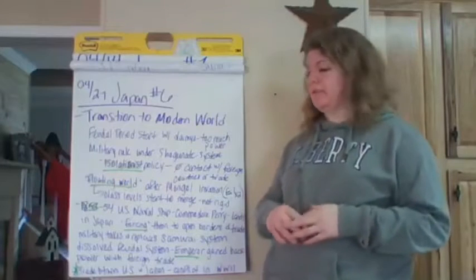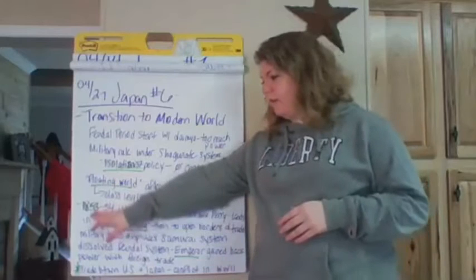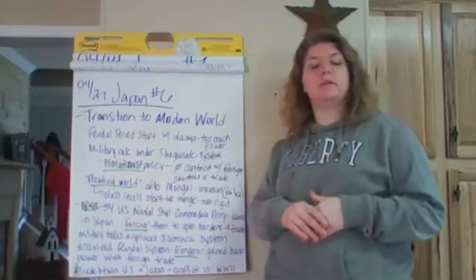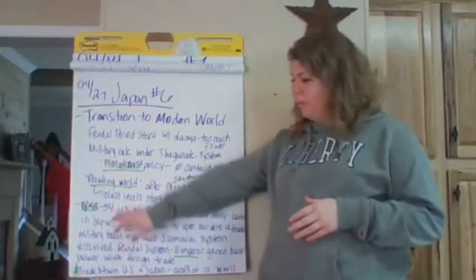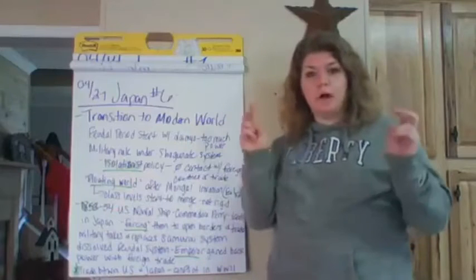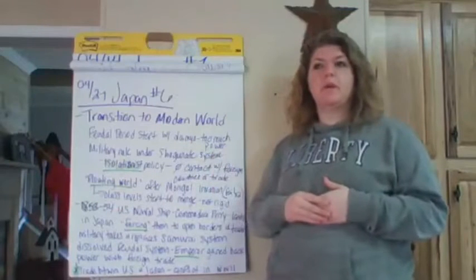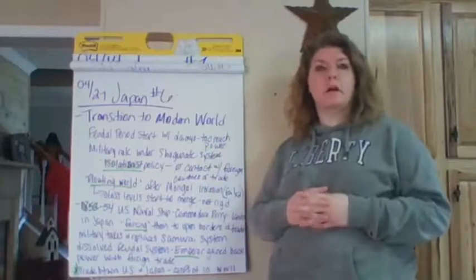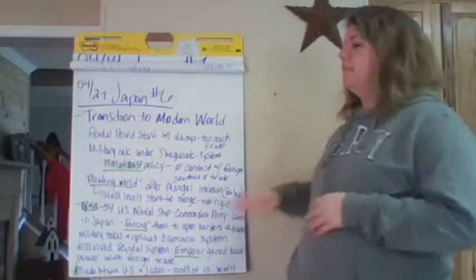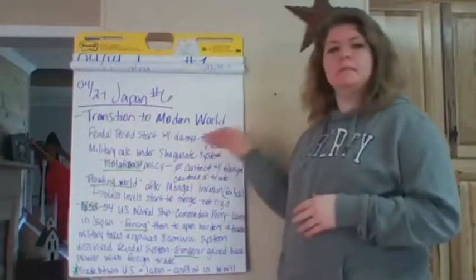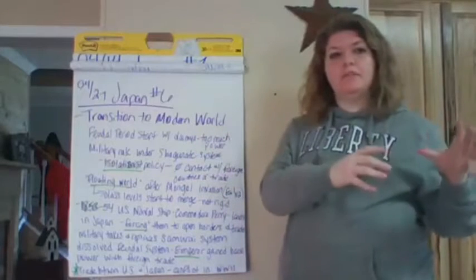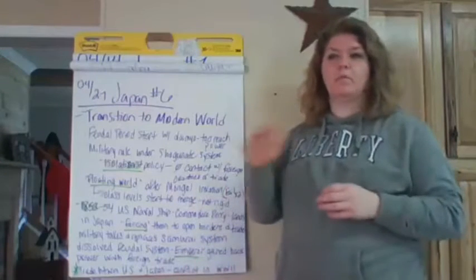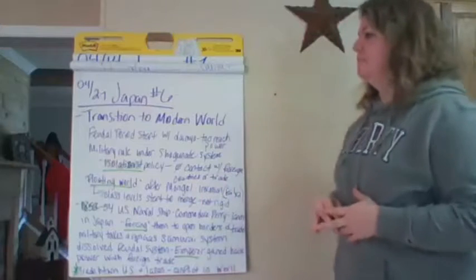We mention 1853 and 1854 because that's really when we see the end of the feudalism period. At that point we're already in what you'd consider more of the modern era of Europe. This is our last video on Japan — this is really where we make the transition from the ancient feudal world of Japan into the modern world we're more familiar with.